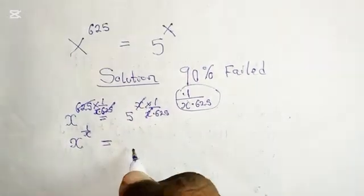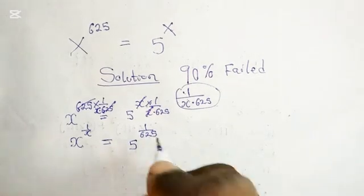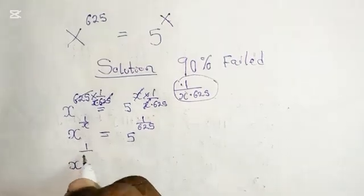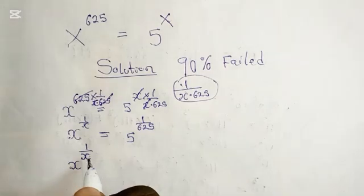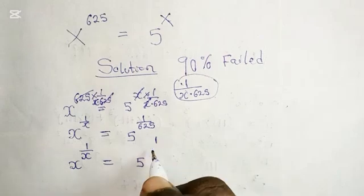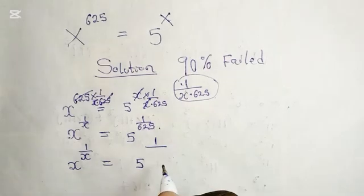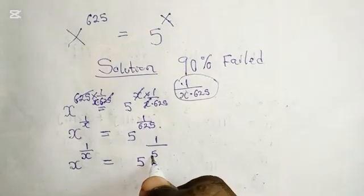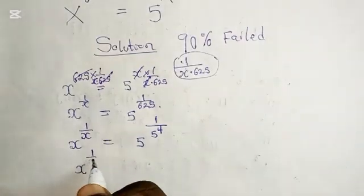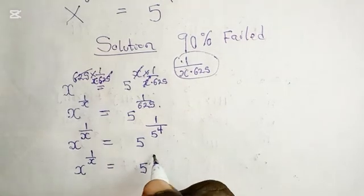The x cancels out and we are left with 5 raised to the power 1 over 625. So we have x raised to the power 1 over x is equal to 5 raised to the power 1 over 625. Now we can realize that 625 is 5 raised to the power of 4, so we have x raised to the power 1 over x equals 5 raised to the power 1 over 5 to the power 4.